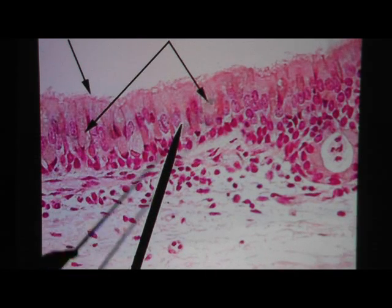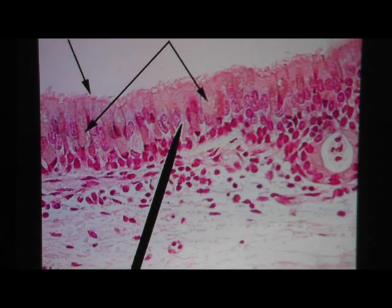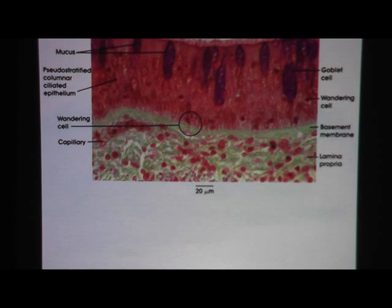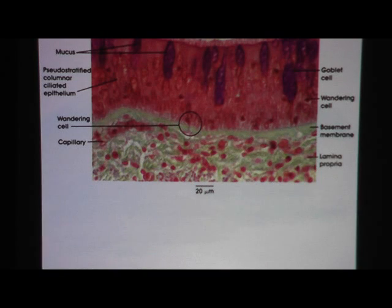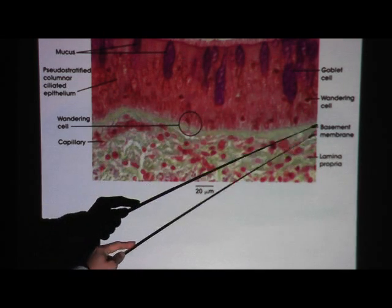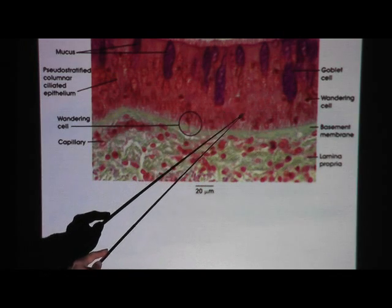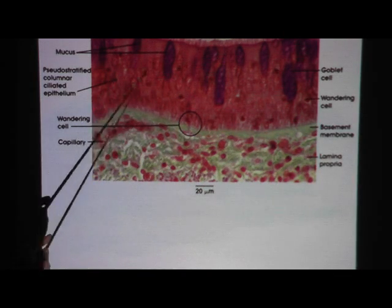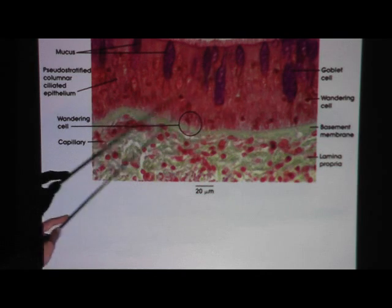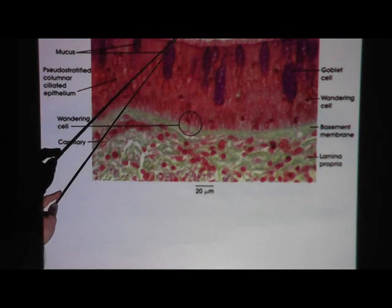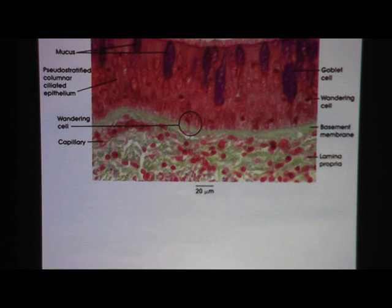There are goblet cells in here. Remember, anytime you have columnar epithelium, be suspicious of finding goblet cells. Here's another view stained specifically for mucin, which is found in goblet cells — it lights up dark purple. These are goblet cells with mucin. The nuclei are the regular red ones scattered in the middle and bottom. Up here at the top we see cilia, and we see the goblet cells releasing mucin. This is ciliated pseudo-stratified columnar epithelium.